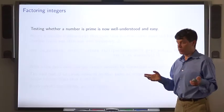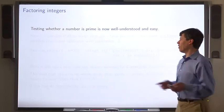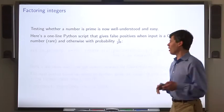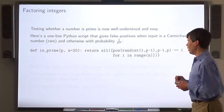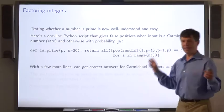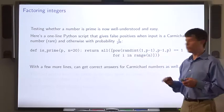Testing whether a number is prime turns out to be the easy part. So here's a one-line script. It doesn't get all numbers right, but there are a few exceptions. With a few more lines, you can get correct answers even for these special numbers called Carmichael numbers.